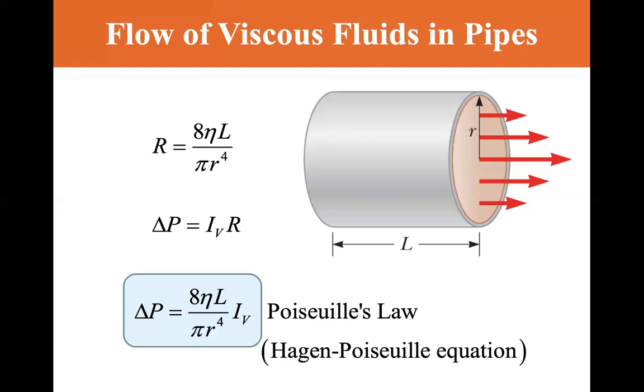And we even have Poiseuille's law where the delta P, we're substituting the R that we just got above for Poiseuille's law. The Hagen-Poiseuille equation is delta P, the change in pressure is equal to eight eta L divided by pi R to the fourth IV, where IV is that volume, the flow of that volume.